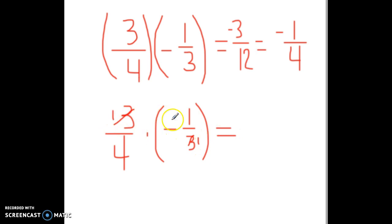Now, what's 1 times 1? Well we get 1. What's 4 times 1? We get 4. And yes, it's still a positive times a negative, so it's negative 1 fourth.